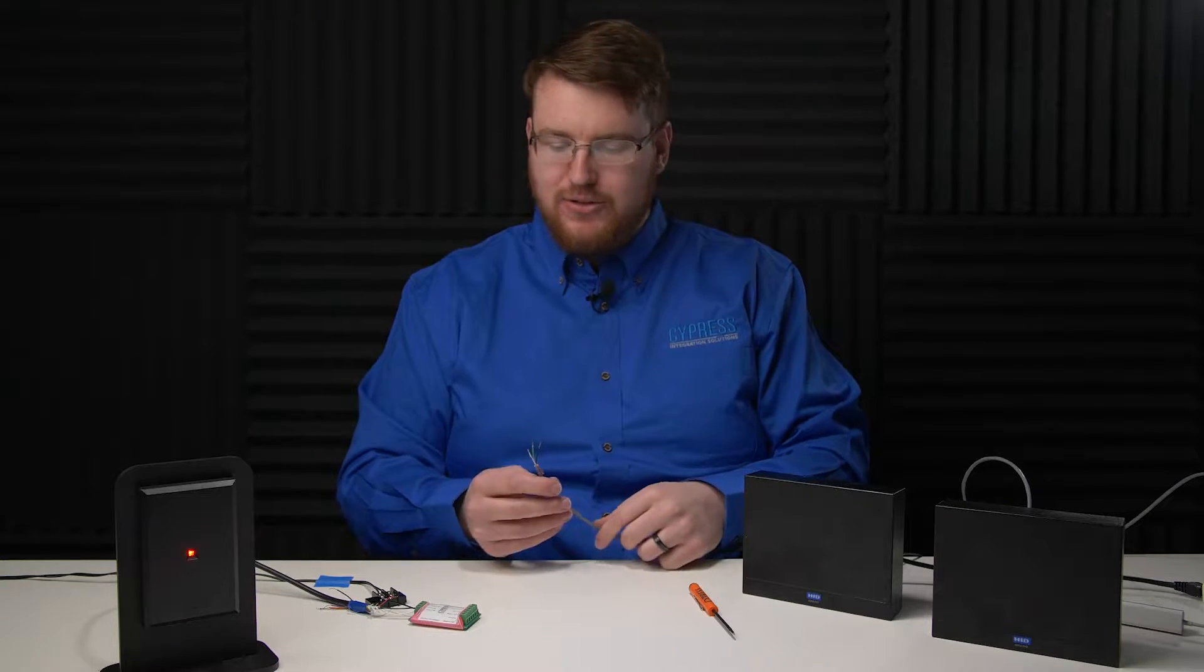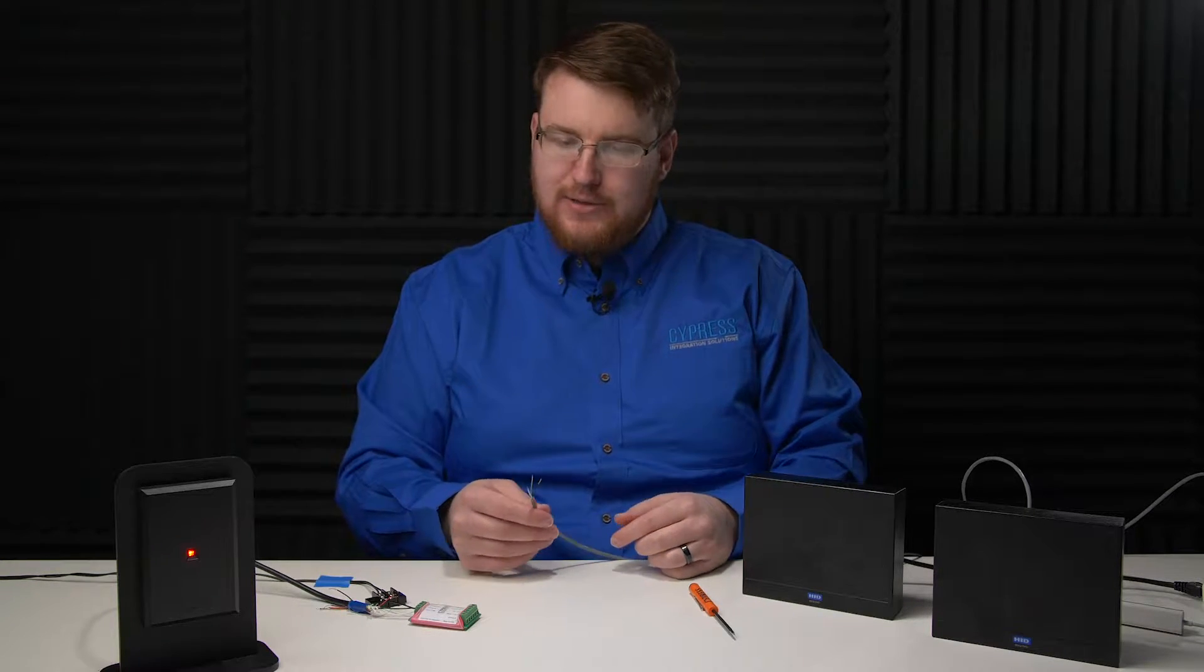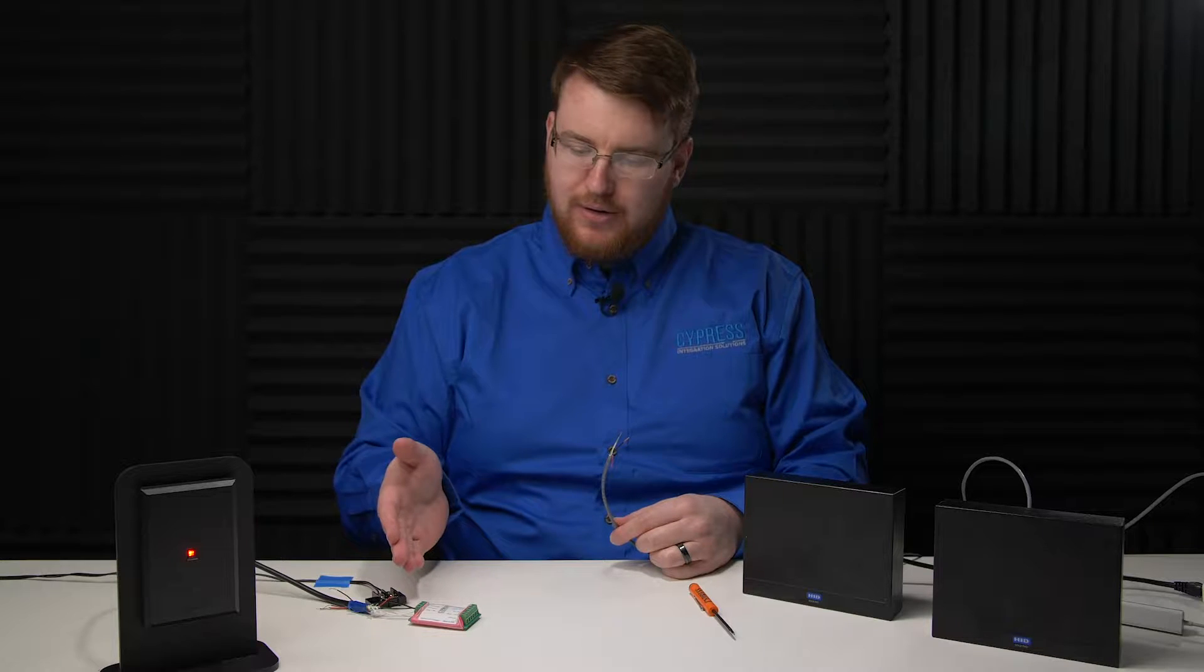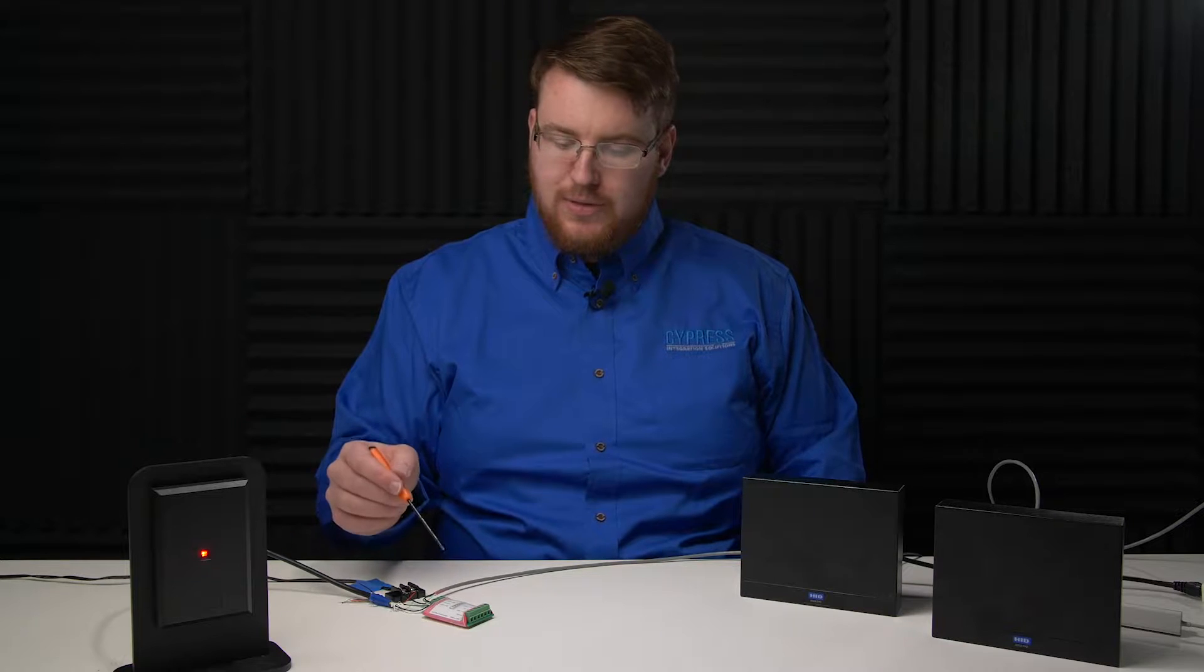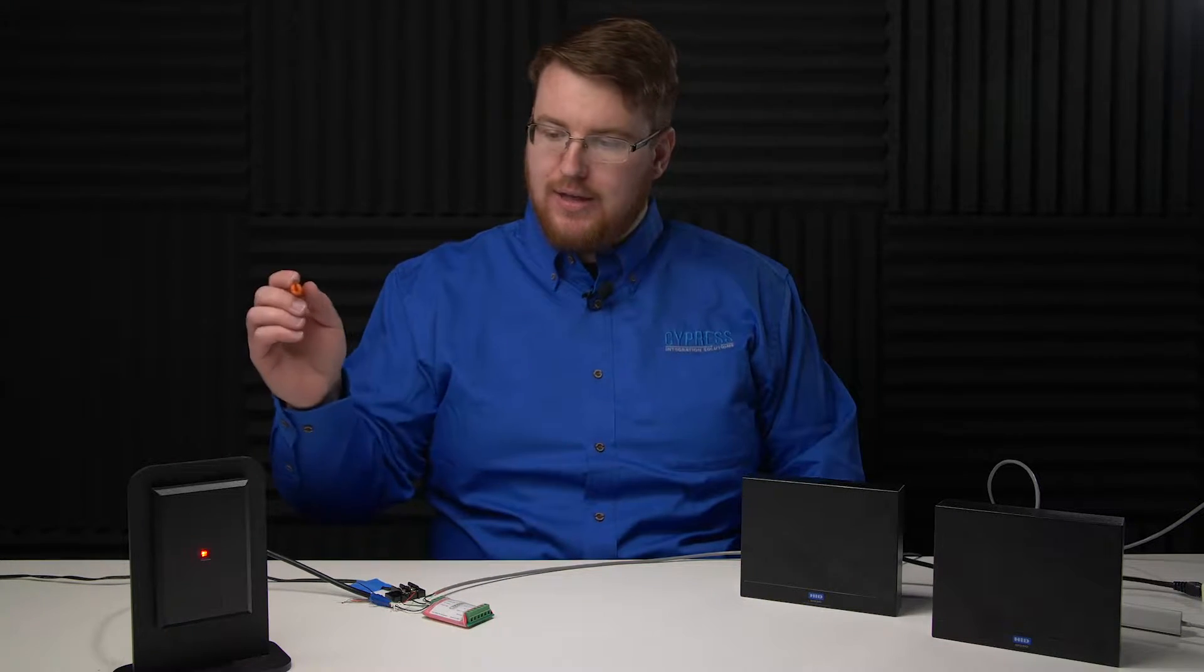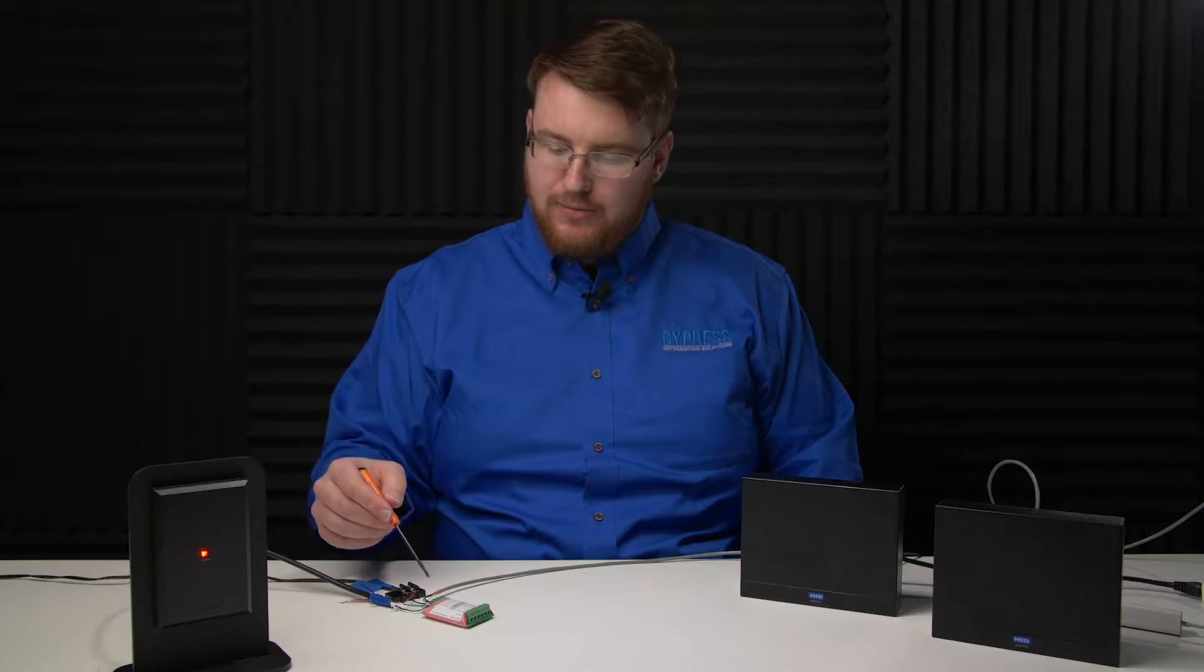Now I will connect controller A to the J1 header of the OPTW in parallel with the Wiegand reader on the J1 side. I've finished connecting controller A to the J1 header of the OPTW.